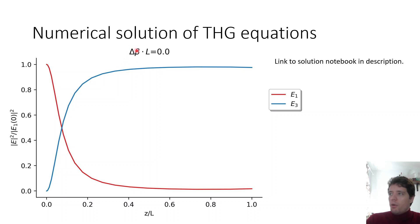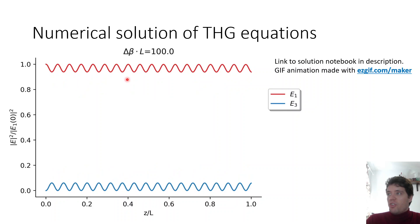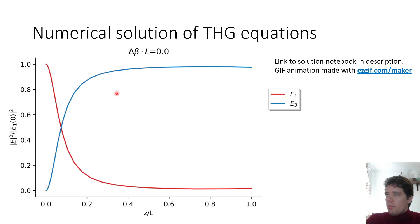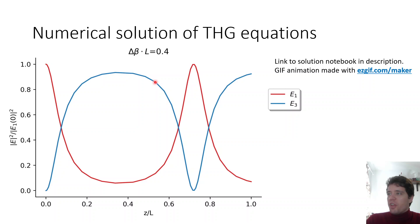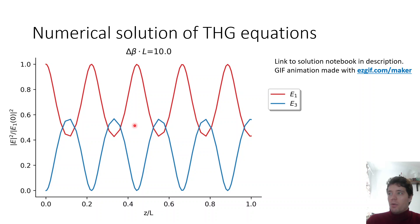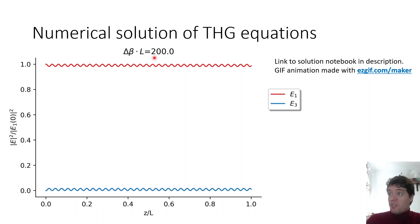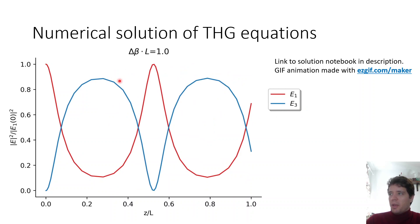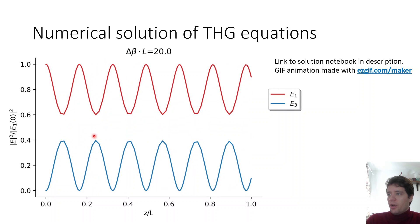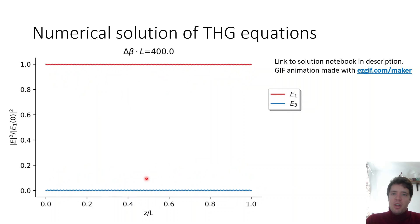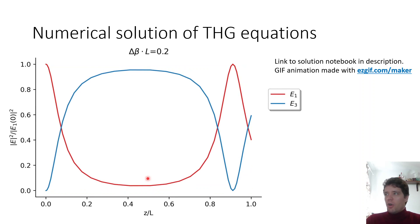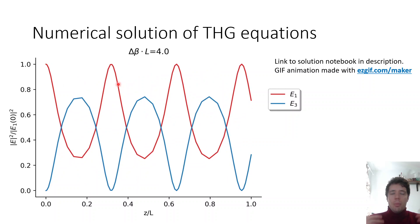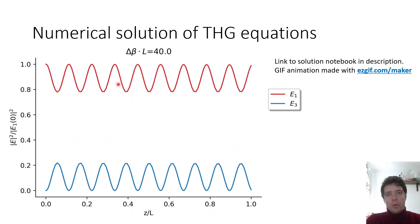With zero phase mismatch, we can see that power very quickly gets transferred from the omega field into the 3 omega field, saturating after a certain propagation distance. But if we introduce a phase mismatch and increase it, power starts to get transferred back into the omega field, and the power wobbles back and forth. As the spatial frequency mismatch increases further, the overall amplitude of the E3 field decreases significantly — illustrating exactly the phase matching principle: if the spatial frequencies of the two fields don't line up, almost no power is transferred.